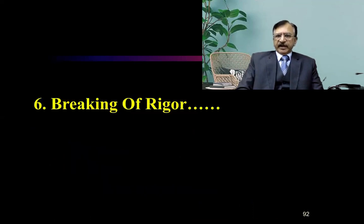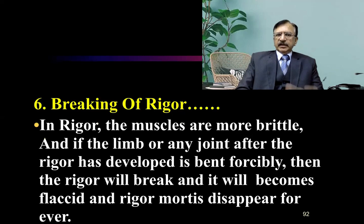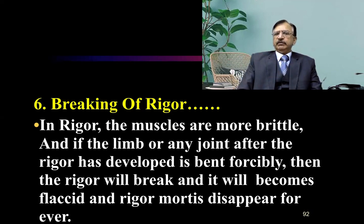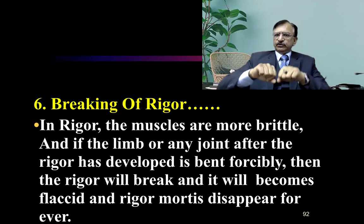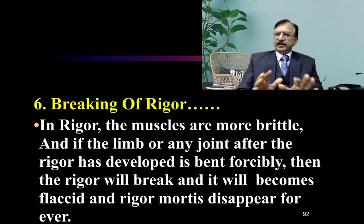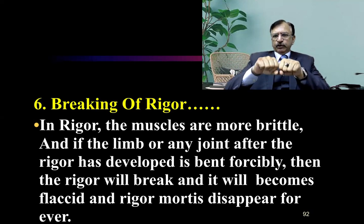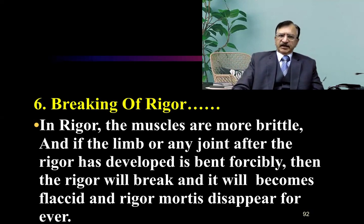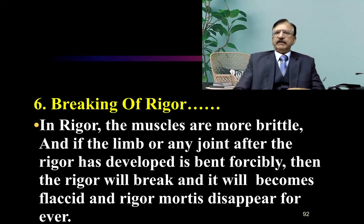Regarding the breaking of rigor: in rigor, the muscles are more brittle, and if a limb or any joint after rigor mortis has developed is forcefully bent, then the rigor will break and it will become flaccid. The arms or legs, if forcefully bent, will become loose. Once the rigor is broken, it will not appear again — it disappears forever.